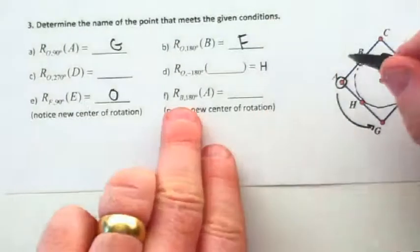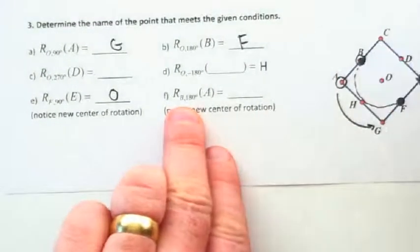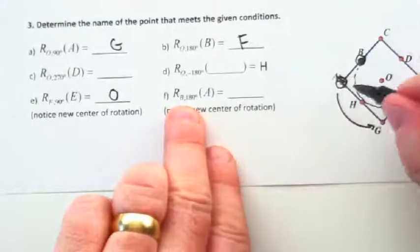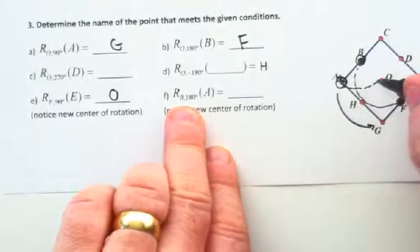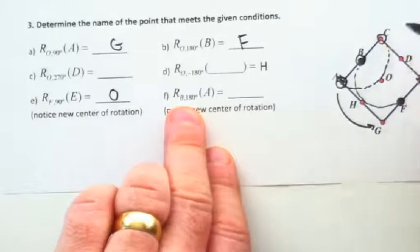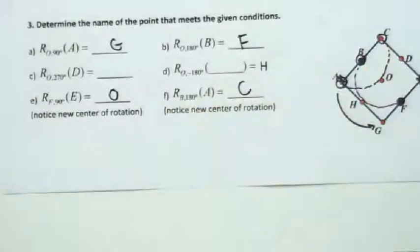Let's try another one. Center rotation is B. We're going to rotate A 180 degrees. And actually, I can visually see that that would land over here at C. Keep your eyes on those. Those are a little bit trickier.